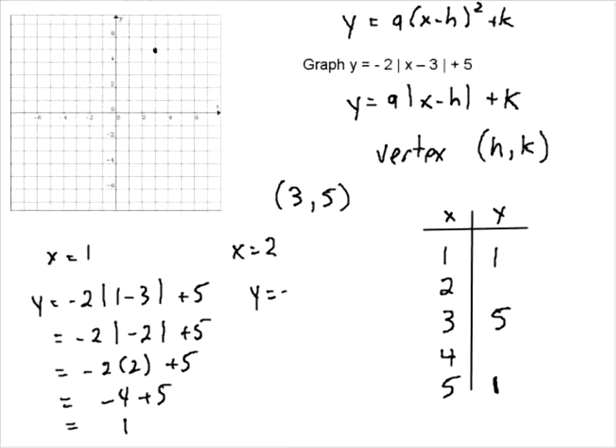Y equals negative 2, absolute value of 2 minus 3 plus 5. So we're going to get negative 2, absolute value of negative 1 plus 5. So we're going to get negative 2 times 1 plus 5, which is negative 2 plus 5, which is going to be 3. And we're going to be at 3 and 3.